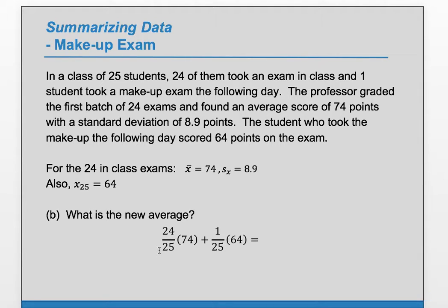So, 24/25 times the 74 plus 1/25 times the 64 gives us the new weighted average of 73.6.